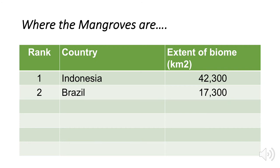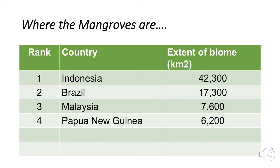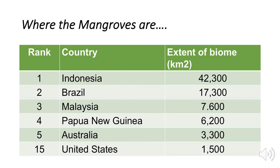Indonesia has the most mangroves in the world — about 42,000 square kilometers — though it also has a very fast loss rate. Brazil ranks second with over 17,000 square kilometers. Malaysia and Papua New Guinea also have large amounts. Northern Australia has a lot of mangroves. Australia ranks fifth; the United States ranks 15th, with about 1,500 square kilometers of mangrove swamps.